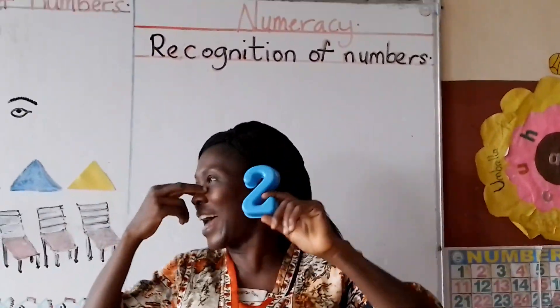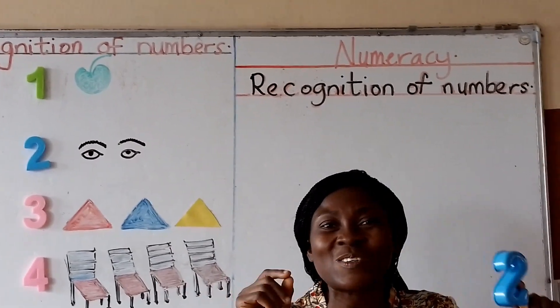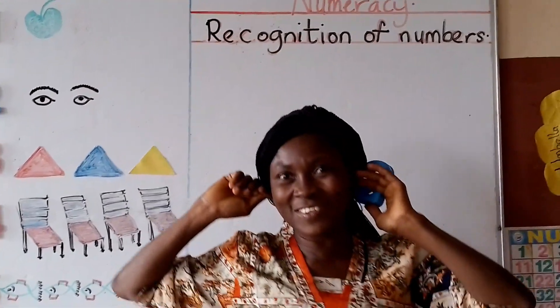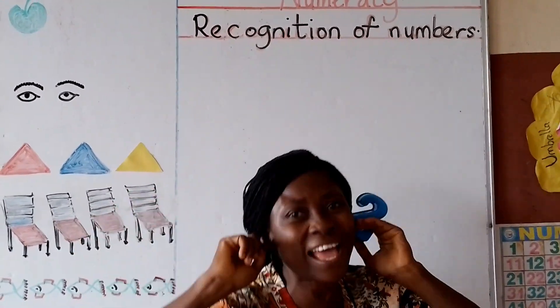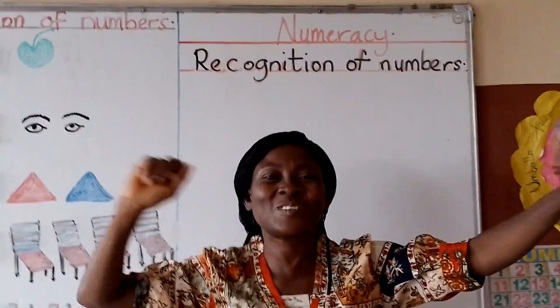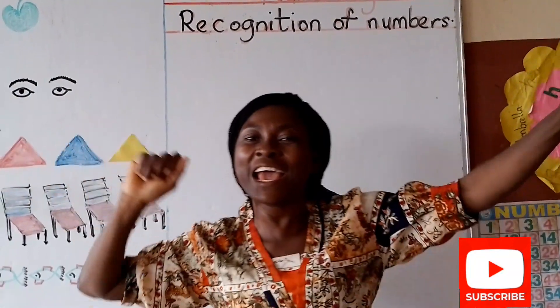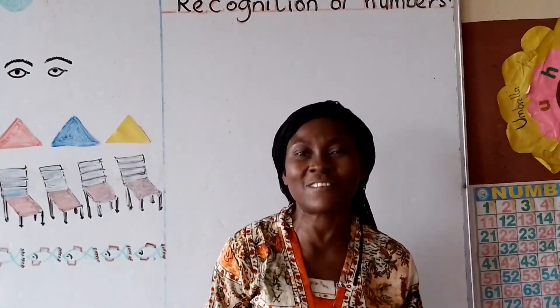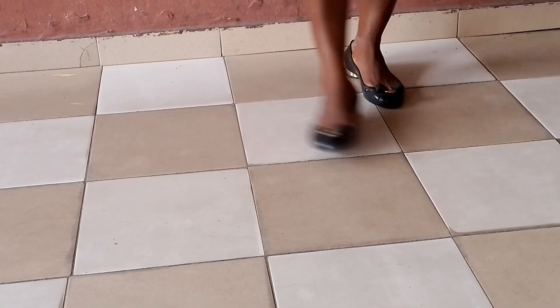I have two eyes, and they are equal size. I have two ears, and they are equal size.